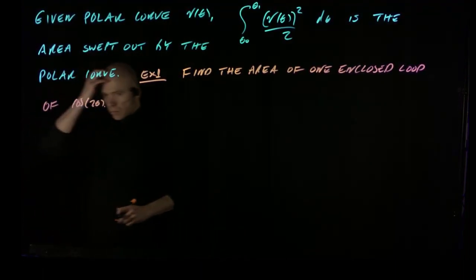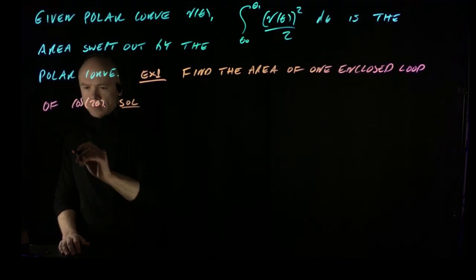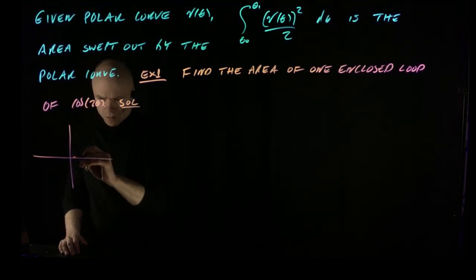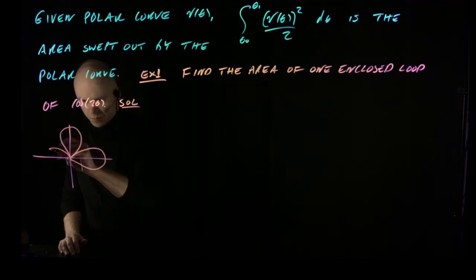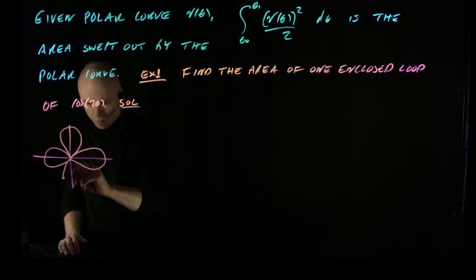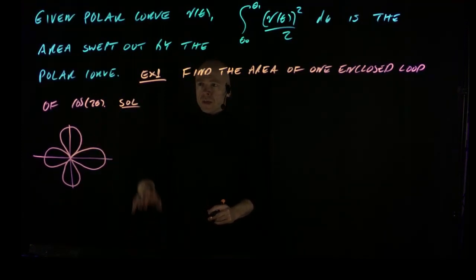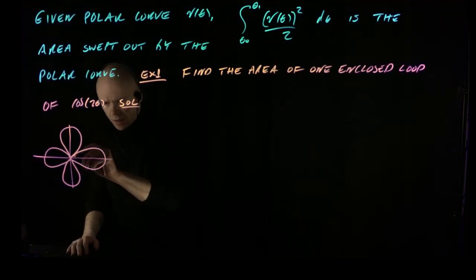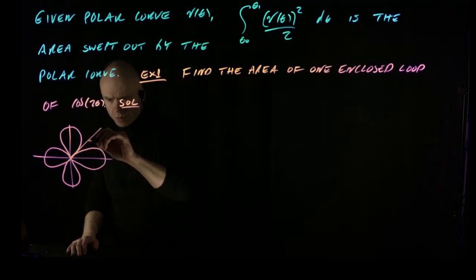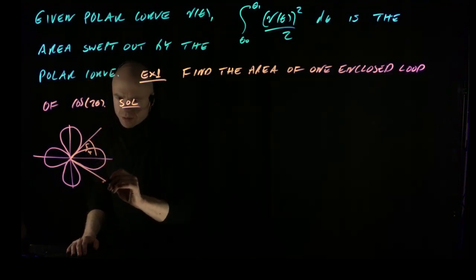Solution. We already sketched this curve — it has this kind of petal or flower shape. One enclosed loop is any one of these petals. They're all symmetrical. The angle here is π/4, and this angle on the other side is −π/4.